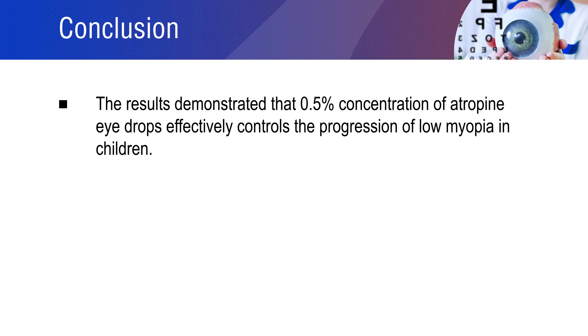The final results of the study suggested that 0.5% concentration of atropine eye drops was effective to control the progression of low myopia in children.